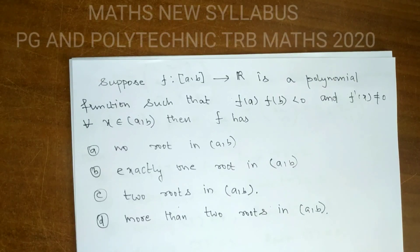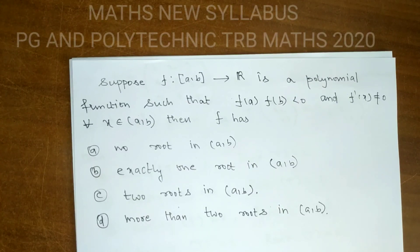Then which of the following is true? (A) f has no real root. (B) f has no root in the open interval (a, b). (C) f has exactly one root in the open interval (a, b). (D) f has two roots in the open interval (a, b). (E) f has more than two roots in the open interval (a, b).